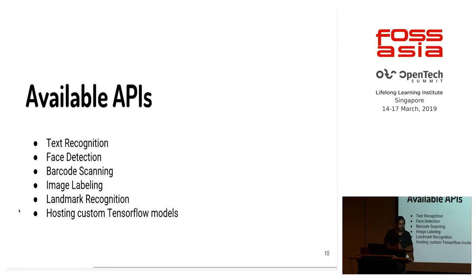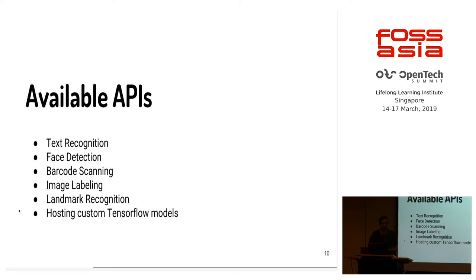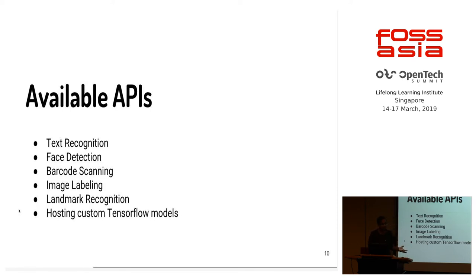So what are all the available APIs? First is text detection — you can detect text from an image. Second is face detection — you can detect faces, emotions, facial contours, and all those things. It also allows you to scan barcodes and extract values from them. It has an image labeling API that takes an image and gets info from it. It also has a landmark recognition API — you take a picture of a famous place and it tells you what that place is, without using the metadata of the image. Lastly, it allows you to host and run custom TensorFlow models. Let's say I want to make an app that detects whether an object is a water bottle or a pen — I can train a custom TensorFlow model, host it on Firebase, and use it.